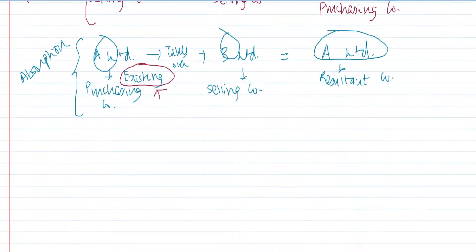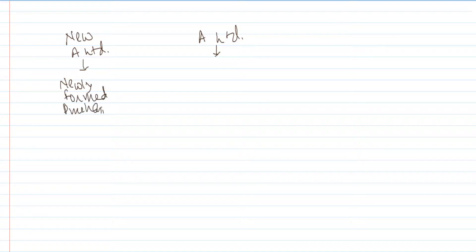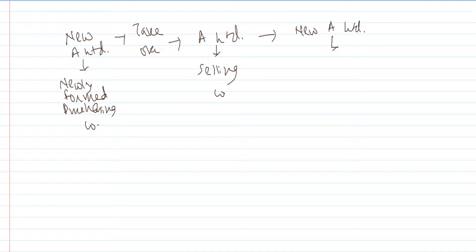Finally, what do we mean by external reconstruction? Let us say there is A Limited, and A Limited is not doing financially well. We want to revive the business of A Limited. So a new company will be formed — let's call it New A Limited. This is a newly formed purchasing company. It will take over A Limited, which acts as the selling company. The resultant company will be New A Limited. This is what we call external reconstruction.